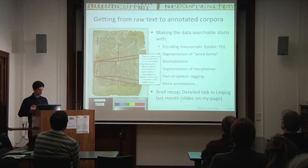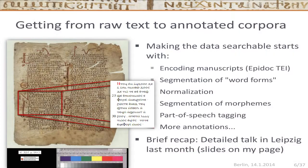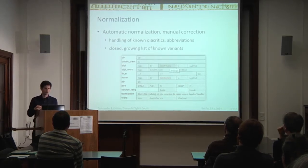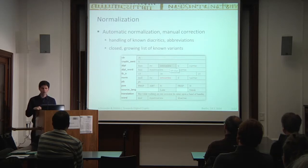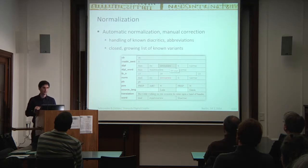I won't talk very much today about getting from raw text to annotated corpora, as I spoke about that in Leipzig last month and the slides are on my page. Briefly: we usually start with a diplomatically transcribed text and then annotate it. The first thing is normalization — transforming everything into a standard orthography as found in a dictionary. This is done automatically insofar as we recognize word forms with known variants or automatically removable diacritics. The list is growing as we work; we encounter new abbreviations, new forms of nomina sacra, and add those to the automatic list.